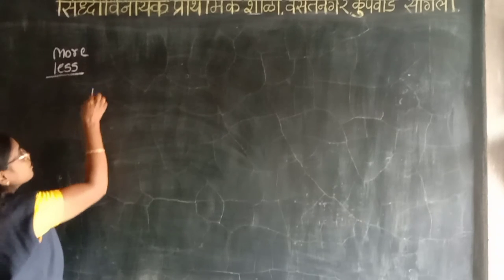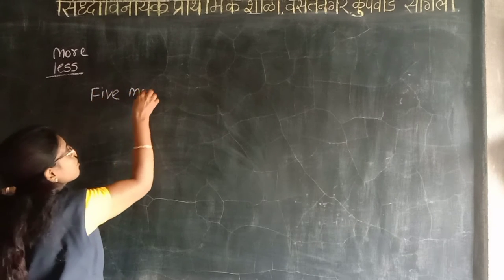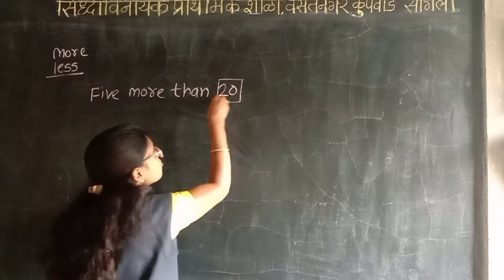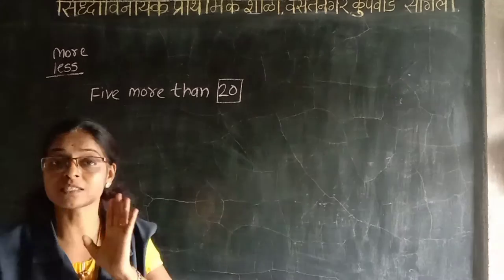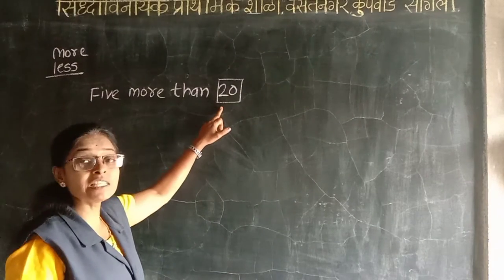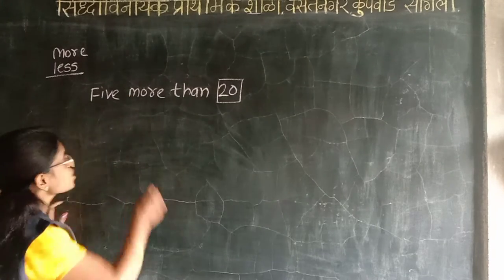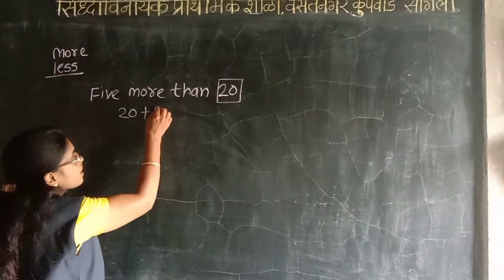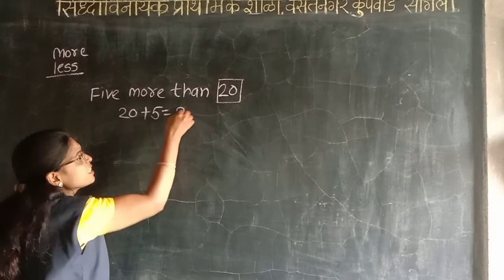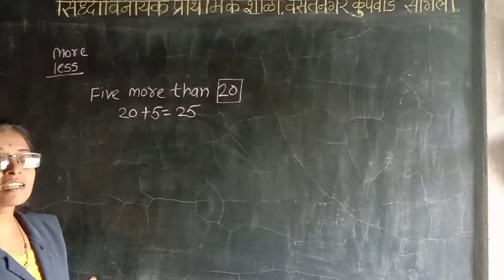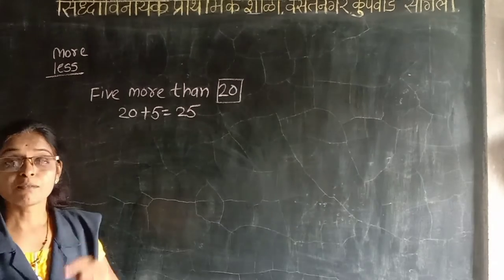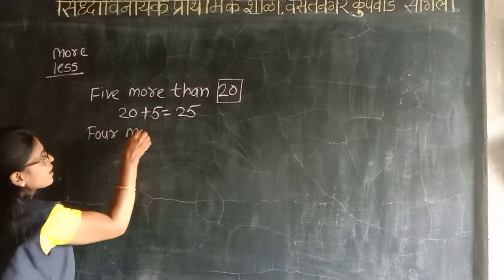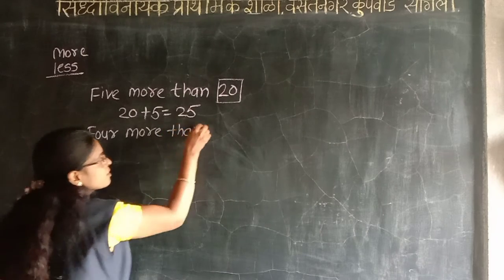More than 20. More than 20. More than 20. More than 2, 4, 20, 5. 5 plus 20. OK, next sentence: four more than twenty-two, four more than twenty-two.